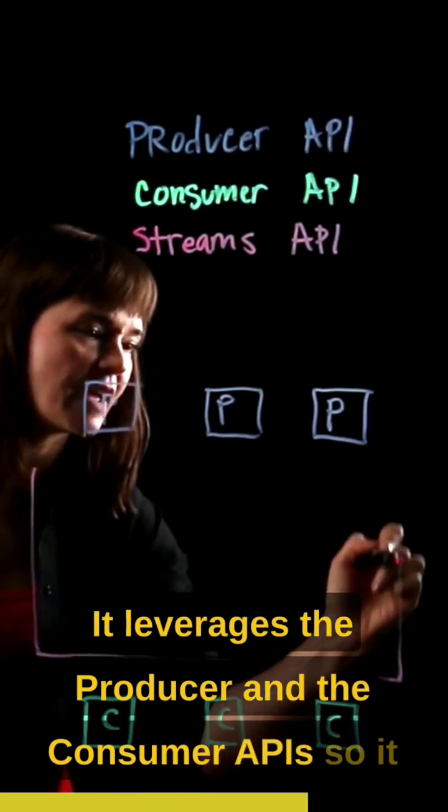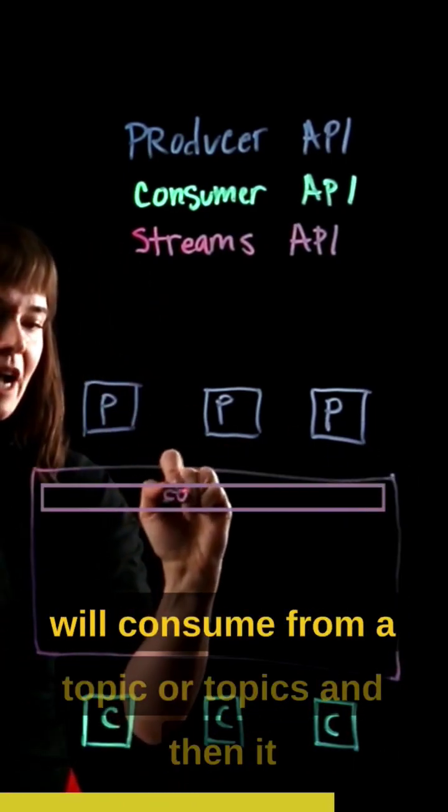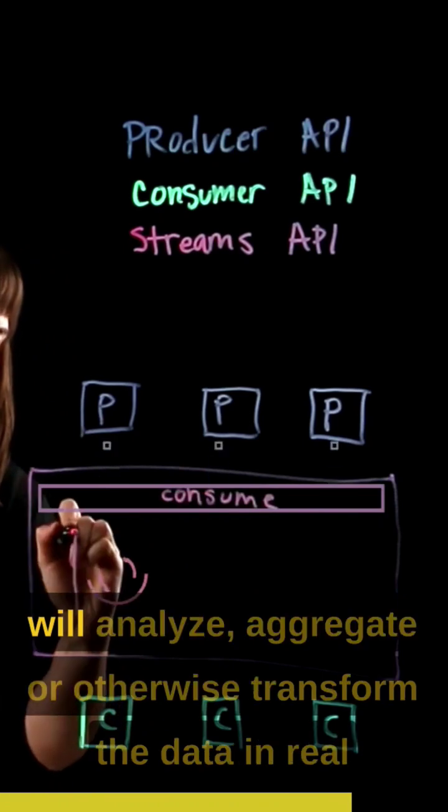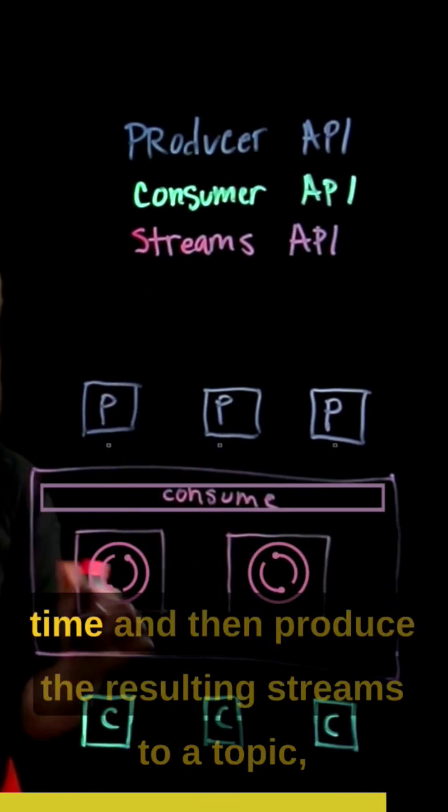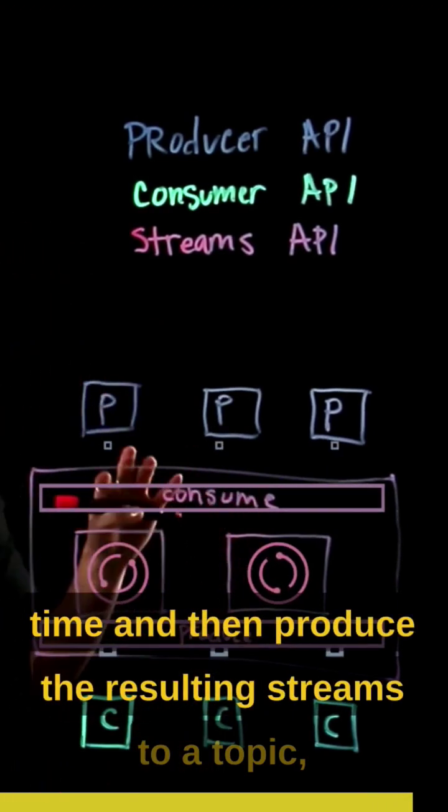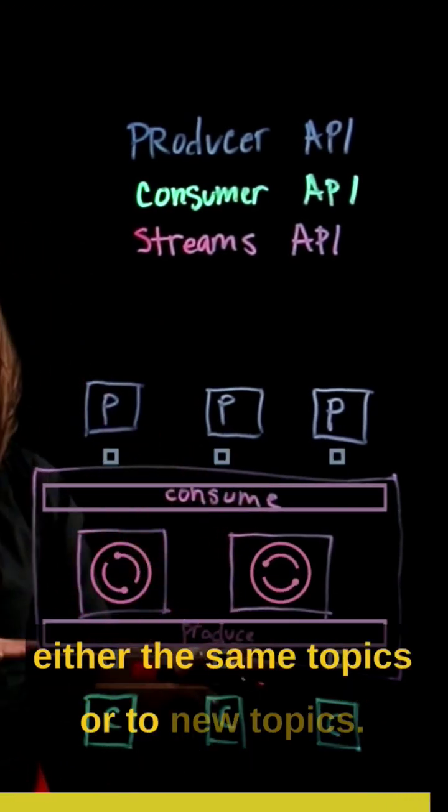It leverages the producer and consumer APIs. It will consume from a topic or topics and then it will analyze, aggregate, or otherwise transform the data in real-time and then produce the resulting streams to a topic, either the same topics or to new topics.